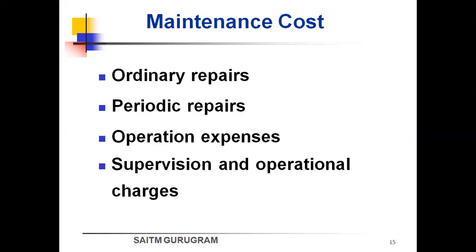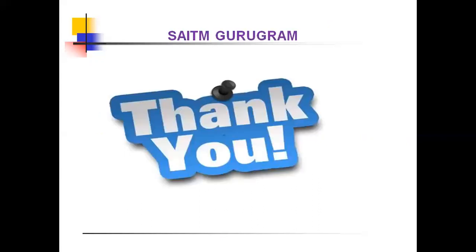In the new high-grade highway system, safety and material usage are considered. The toll tax is more than the operation charges, and that is also considered. Supervision staff is also considered in maintenance cost.